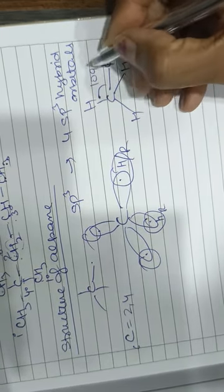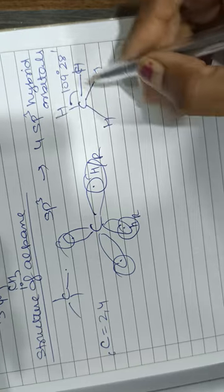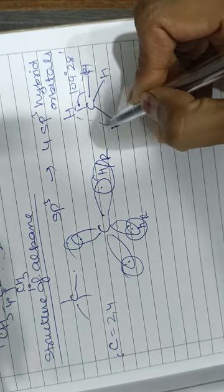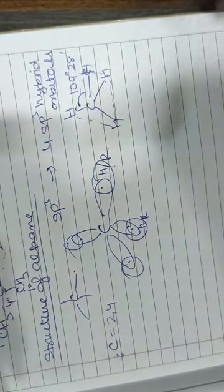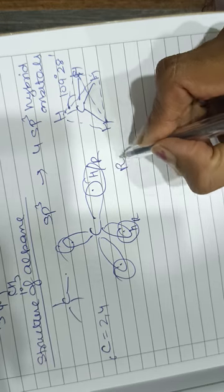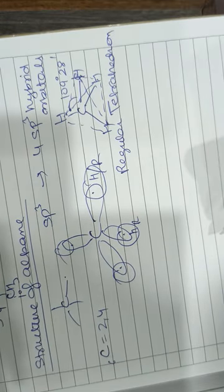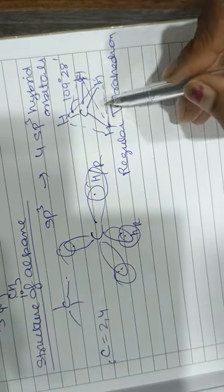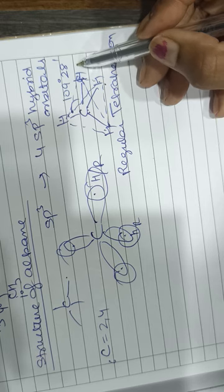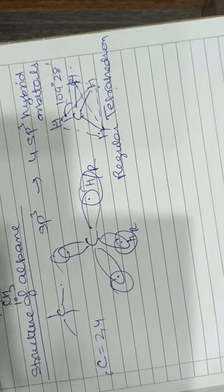So carbon is attached to 4 atoms or 4 groups of atoms through sp3 hybridization. In this case the bond angle is 109 degrees and 28 minutes. If we look at the geometry or shape of the molecule, it is a regular tetrahedron. That is the structure and shape of an alkane molecule.